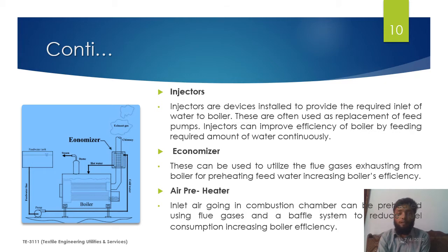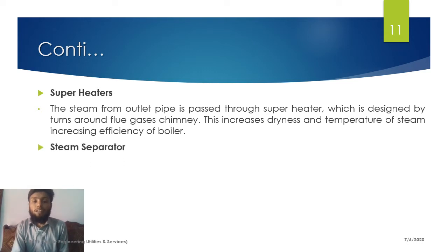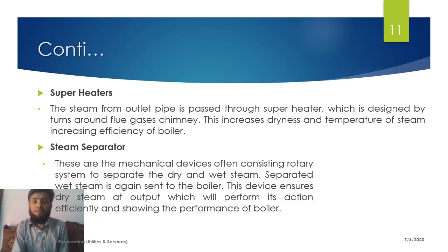The fourth accessory is air preheaters, also installed along the chimney, used for heating the air going into the combustion chamber. The fifth is a superheater — a device used for heating the steam going out from the boiler. The steam travels around the chimney in the superheater so that it is converted into dry steam.